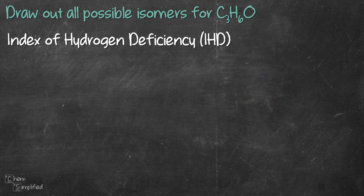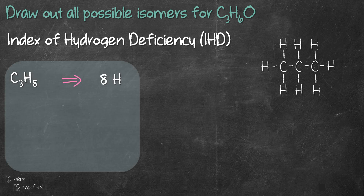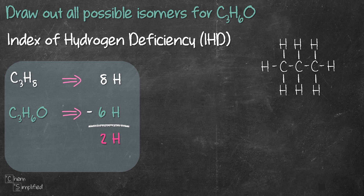We calculate IHD by comparing our C3H6O formula with an alkane containing the same number of carbons. In this case, our benchmark is propane, C3H8. Propane has 8 hydrogens, whereas our formula C3H6O has 6 hydrogens. When calculating IHD, we ignore the oxygen. We subtract the hydrogens — that gives us 2 — and IHD is half of that number. Half of 2 gives us 1, so we have an IHD of 1.